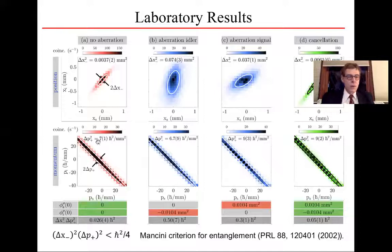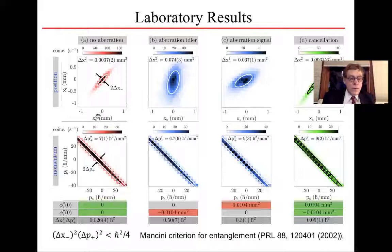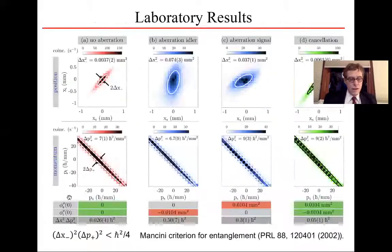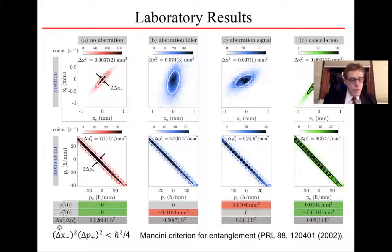Here's some laboratory results. First of all, if there are no aberrations present, you see that the photons in the signal and idler are very strongly entangled. Here's the idler position, here's the signal position. And you see that they're very, very strongly correlated. The momentum is very strongly anticorrelated. We quantify this by looking at the uncertainty product. And the uncertainty product delta X squared delta P squared is 0.026, which is much less than a quarter. So we know that they're entangled.